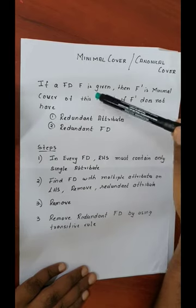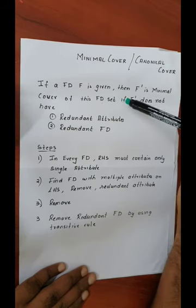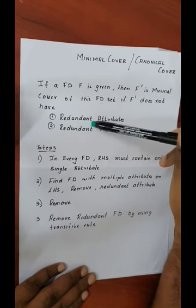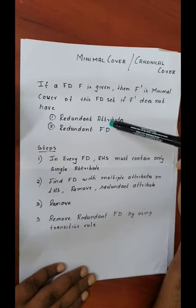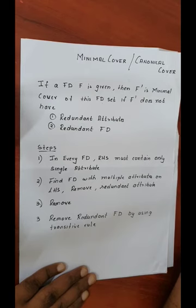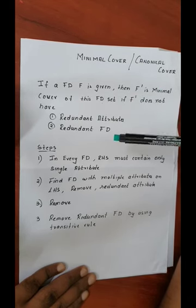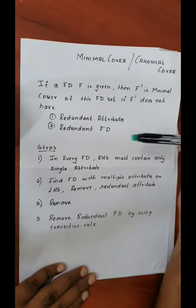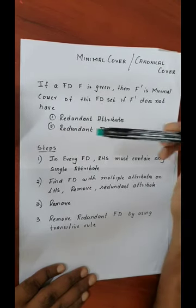If a set of functional dependencies F is given, then F' is a minimal cover of F if F' does not have redundant attributes and does not have redundant functional dependencies. So in the given functional dependency set there will be many attributes that are redundant or certain functional dependencies that are redundant — those can be removed. After removal of these redundant attributes and redundant functional dependencies, the result is known as the minimal cover.